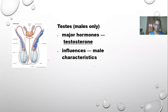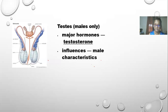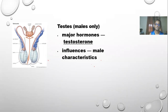Hypothyroidism is when you don't produce enough thyroid hormones — a low amount of production. Symptoms include fatigue, weight gain, constipation, cold intolerance, dry skin and hair, slow heart rate, irregular periods, and fertility issues. Hypothyroidism is typically treated by supplementing thyroid hormone with medication.